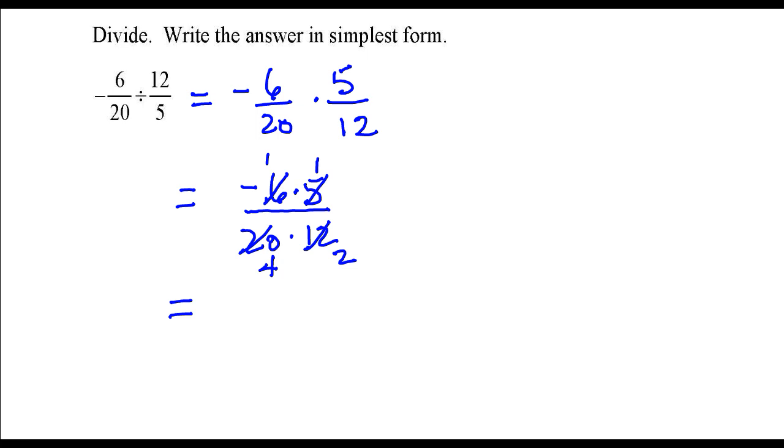I'm going to write what I have left over. In the numerator I have negative 1 times 1, that's a negative 1. In the denominator I have 4 times 2, that's 8. And that's it.